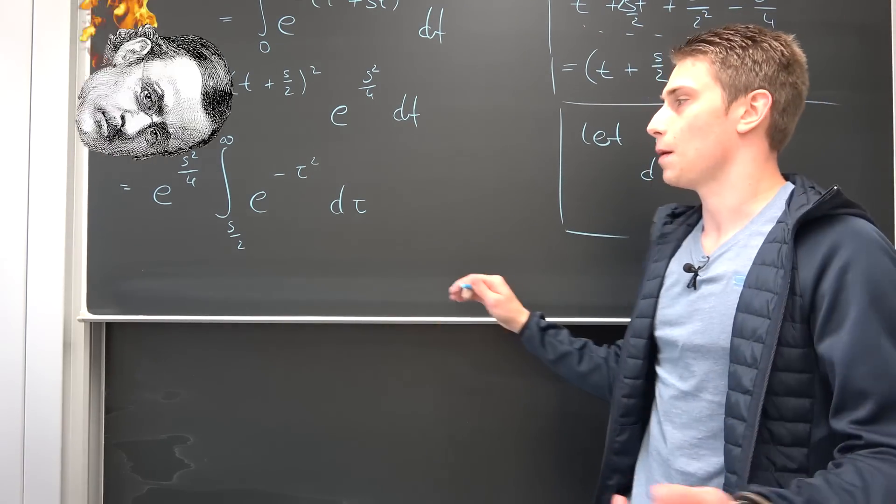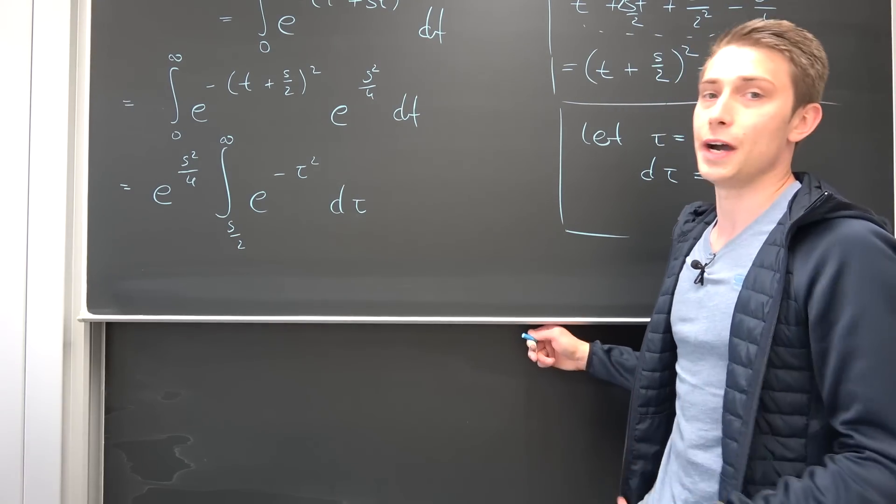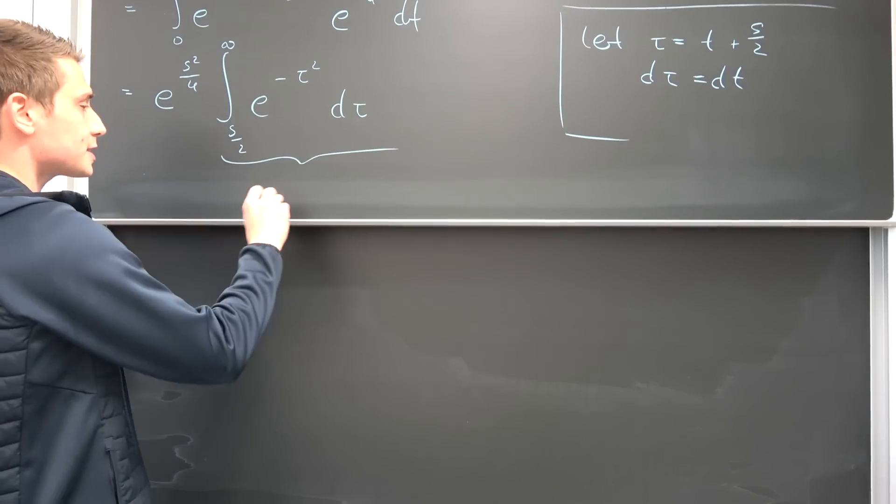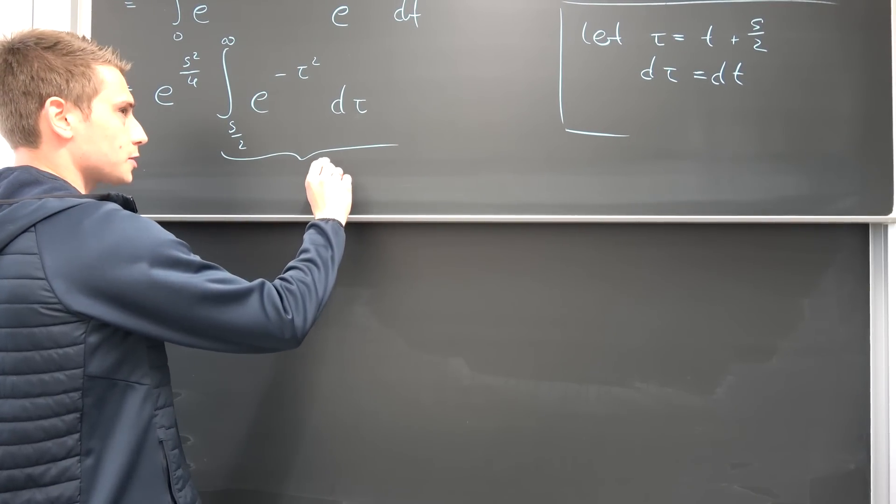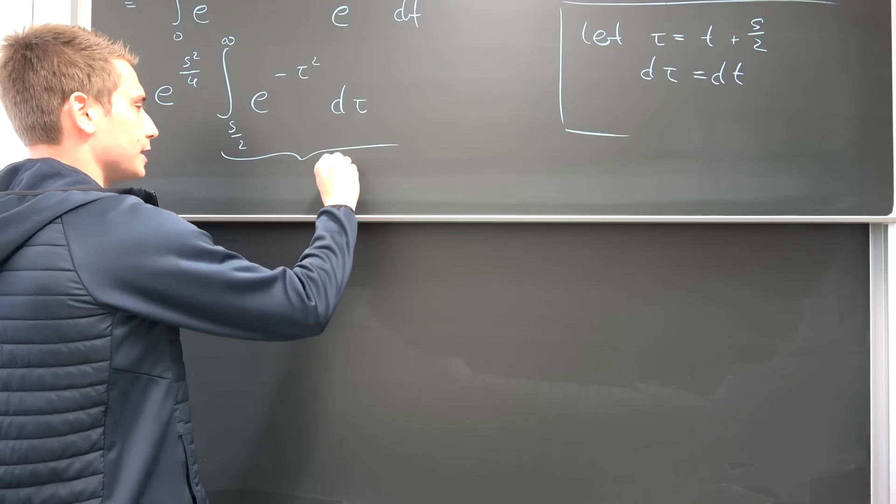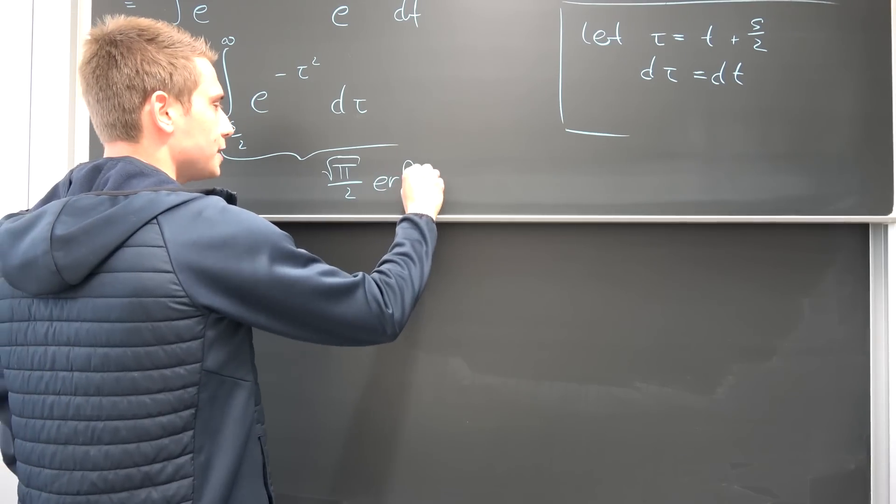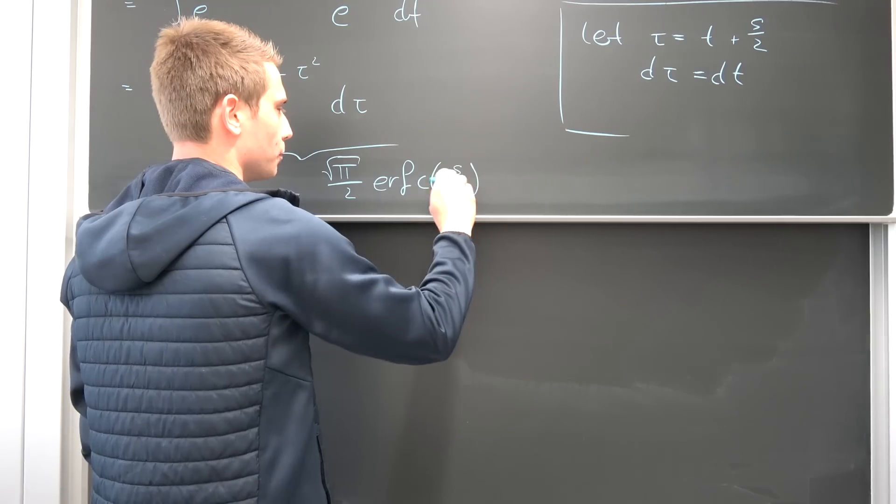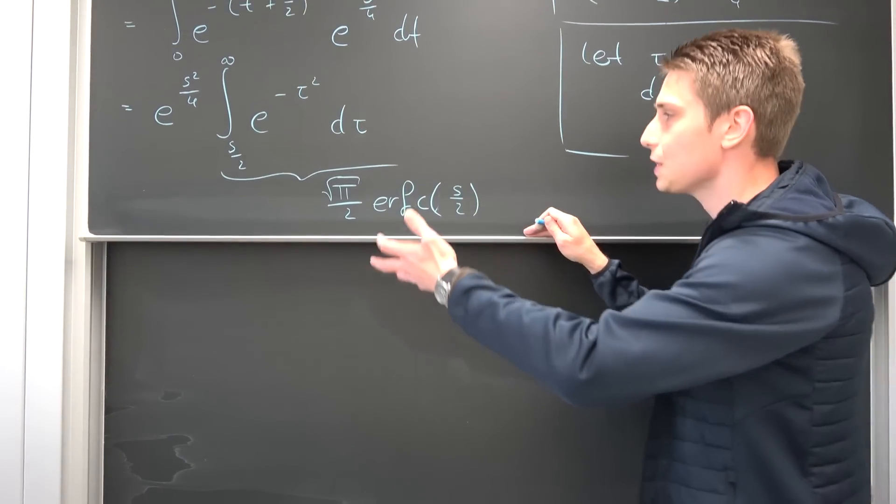This is going to give us e to the negative tau squared integrated with respect to tau. So now you could say that we are basically done because this thing right here is by definition some analytical function. Namely, we can identify this as, this is nothing but, let me think, so we should get a factor of, yeah, okay. This is square root of pi over 2 times the complementary error function of s over 2.